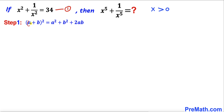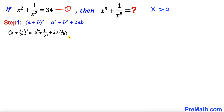If we suppose a = x and b = 1/x, then we can write (x + 1/x)² = x² + 1/x² + 2·x·(1/x). Here we can see that x and 1/x cancel each other out, so this equation becomes (x + 1/x)² = x² + 1/x² + 2.